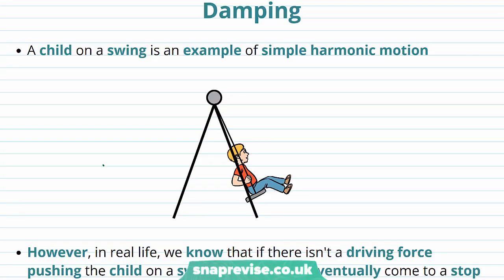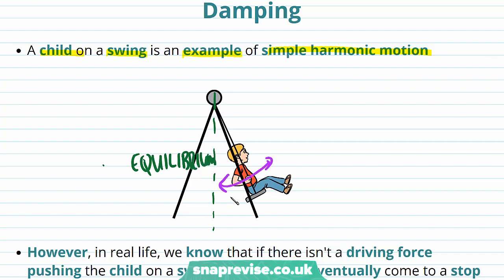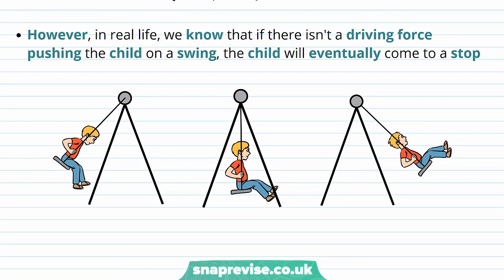We're going to introduce a new concept called damping. We already know that a child on a swing is an example of simple harmonic motion. The child will swing back and forth through an equilibrium position. When we talk about simple harmonic motion, we assume the oscillations go on forever. However, in real life, if there isn't a driving force pushing the child on a swing, the child will eventually come to a stop.